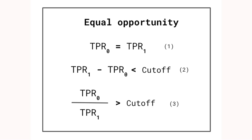We discussed some definitions of fairness in a previous video. We could choose a penalty parameter that will help satisfy one of these definitions, such as equal opportunity. In this case, we would penalize the model if it did not produce equal true positive rates for the privileged and unprivileged groups.